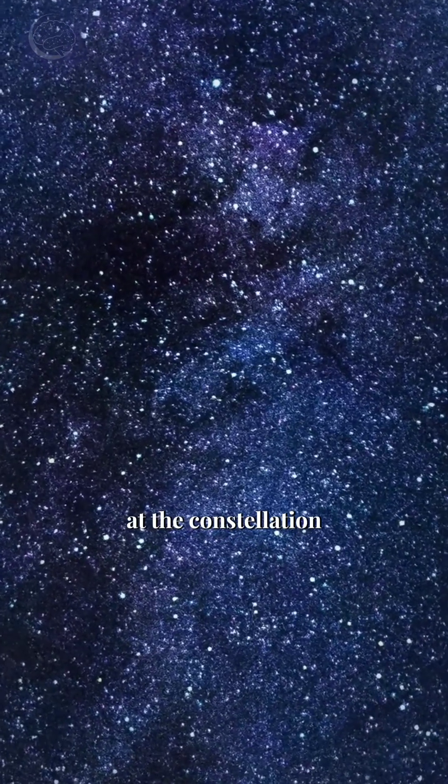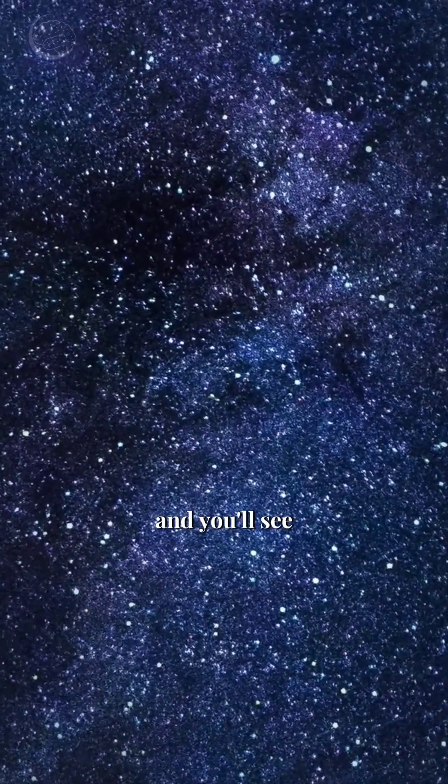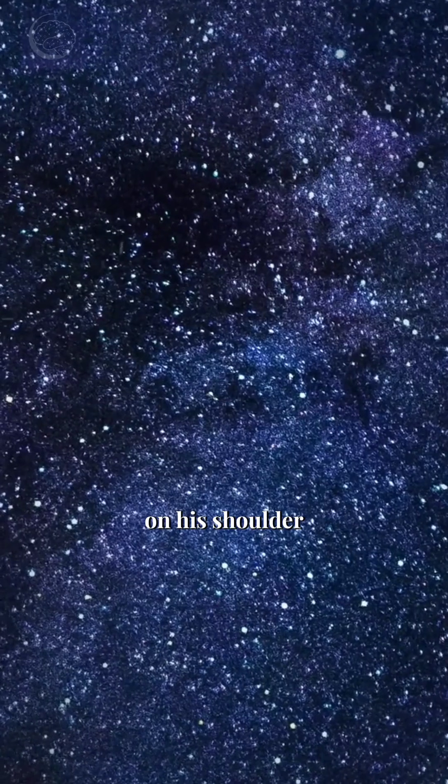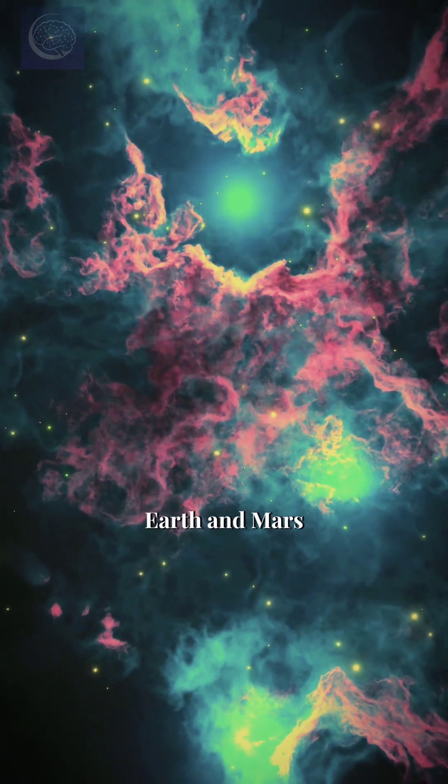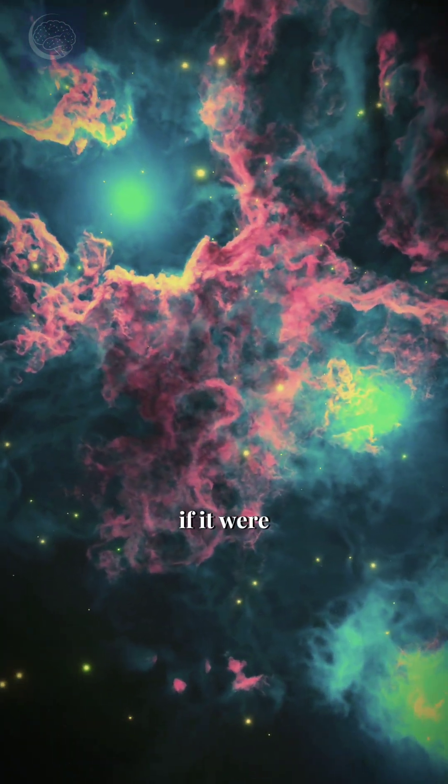Look up tonight at the constellation Orion and you'll see a red giant on his shoulder: Betelgeuse. This star is so large it would swallow Mercury, Venus, Earth, and Mars if it were in our solar system.